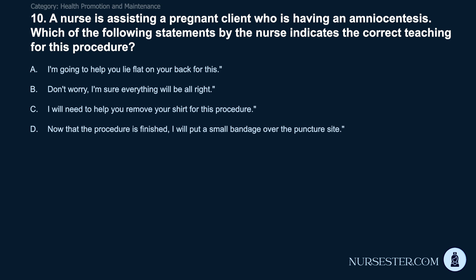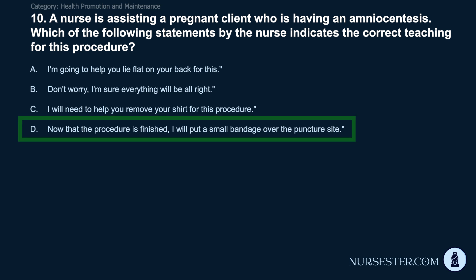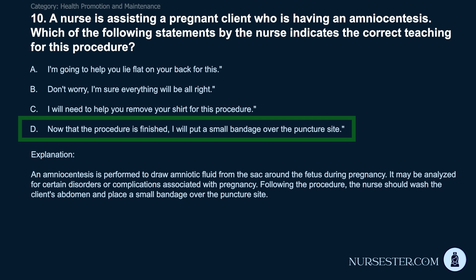Question 10: A nurse is assisting a pregnant client having an amniocentesis. Which statement by the nurse indicates correct teaching? A) I'm going to help you lie flat on your back for this. B) Don't worry, I'm sure everything will be all right. C) I will need to help you remove your shirt for this procedure. D) Now that the procedure is finished, I will put a small bandage over the puncture site. Correct answer: D. An amniocentesis draws amniotic fluid from the sac around the fetus and may be analyzed for certain disorders. Following the procedure, the nurse should wash the client's abdomen and place a small bandage over the puncture site.